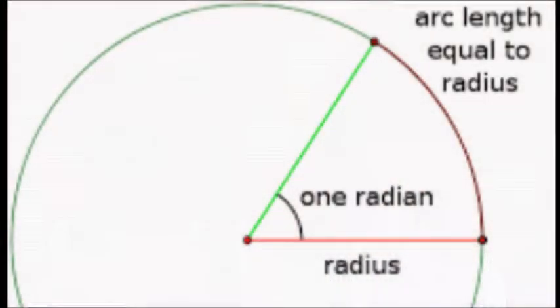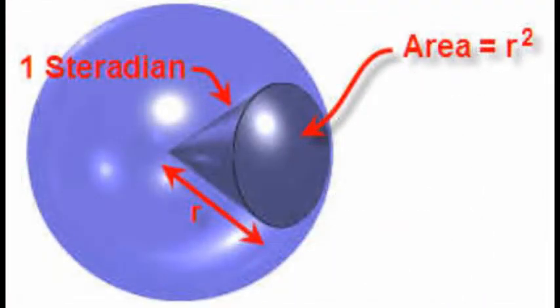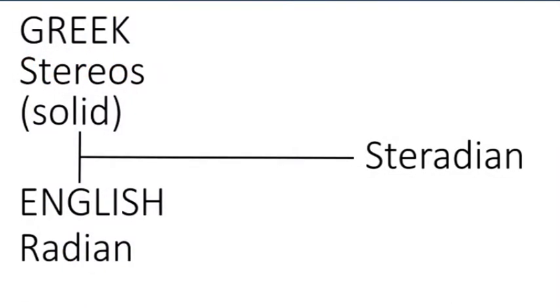But what's a steradian? A radian cuts out a length of a circle circumference equal to the radius. A steradian cuts out an area of a sphere equal to the radius squared. The name steradian is made up from the Greek 'steros' for solid and radian. The SI unit abbreviation is SR.